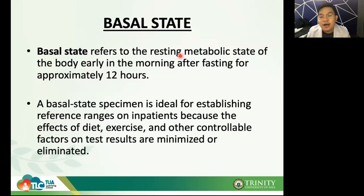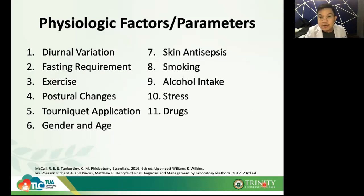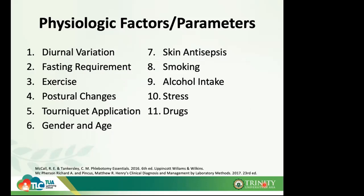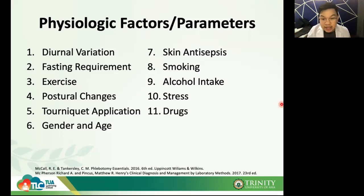The different physiologic factors and parameters we have are: diurnal variation, fasting requirement, exercise, postural changes, tourniquet application, gender and age, skin antisepsis, smoking, alcohol intake, stress, and drugs. Let's discuss the first one — diurnal variation, which is part of your biorhythm. Diurnal variation and circadian rhythm are very important to understand: the levels of many blood components exhibit diurnal or circadian variation and fluctuation.